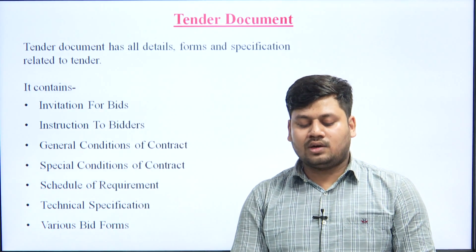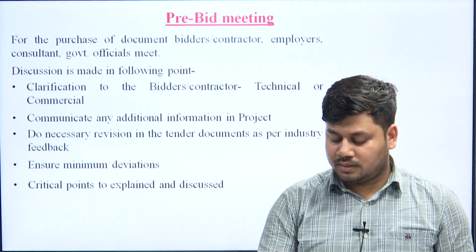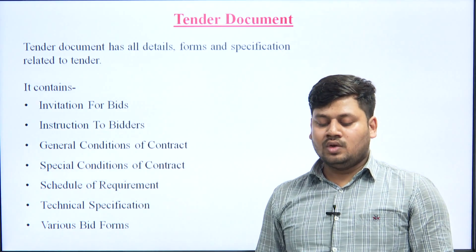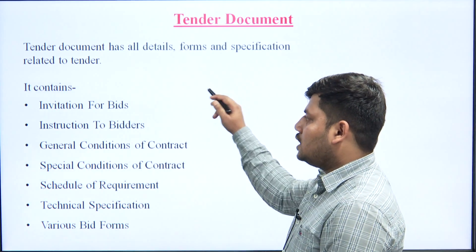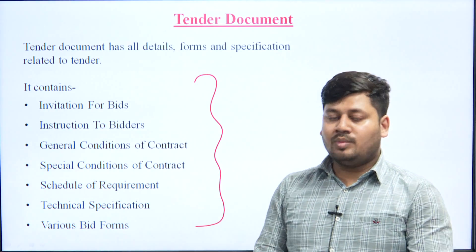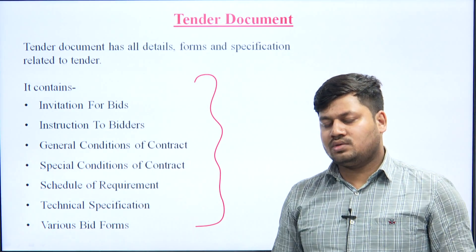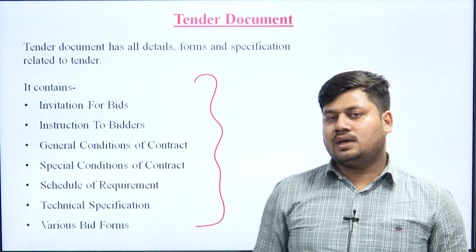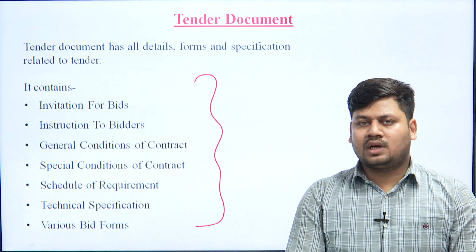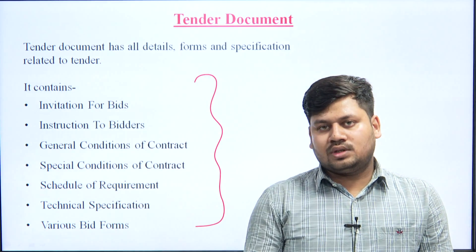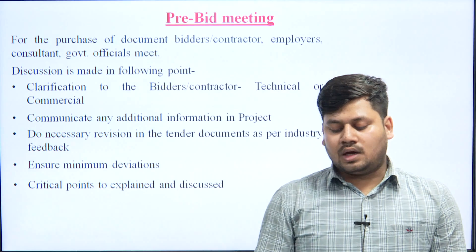Now we understand about the tender document. We covered this in the previous class. The tender document should have proper forms, details, and specifications — how the work will be done, where it will be done, how the material availability and supply will be managed, and who will be responsible. The tender document is the document which any contractor sees before filing their tender. It has a cost and must be purchased by the contractor from the owner.